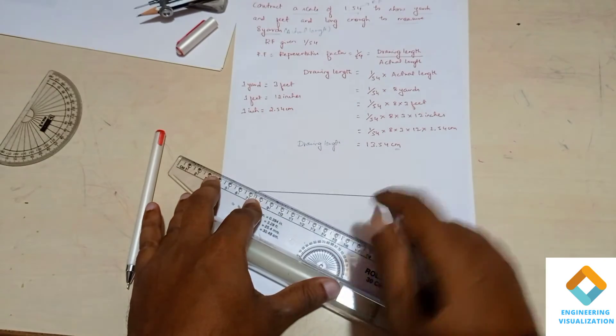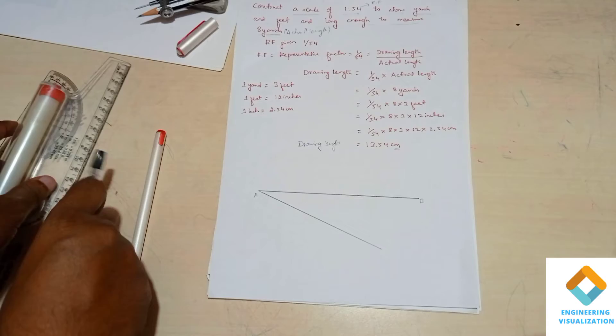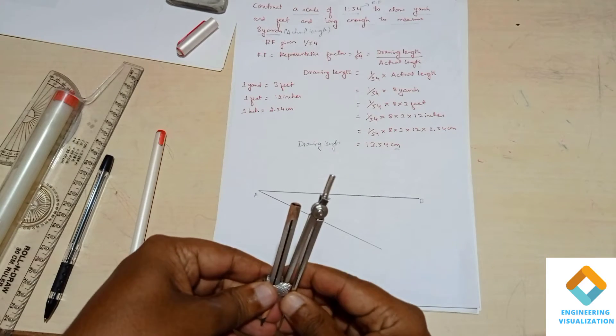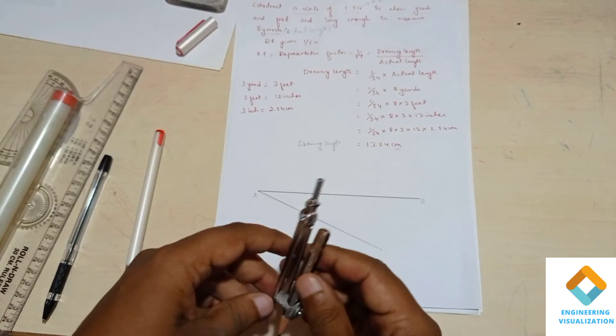Draw an angle line that should be having angle less than 90 degrees. Take compass, take any length, and cut total 8 arcs.